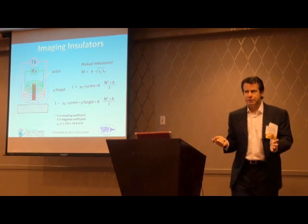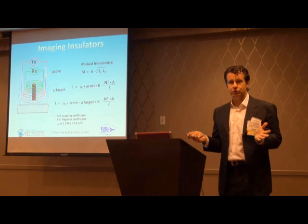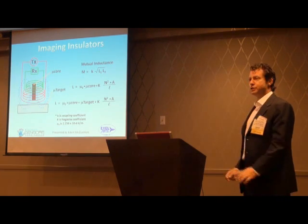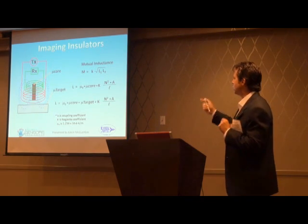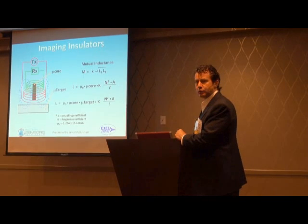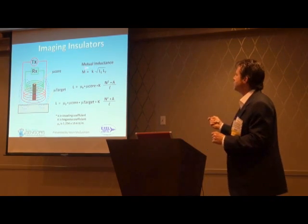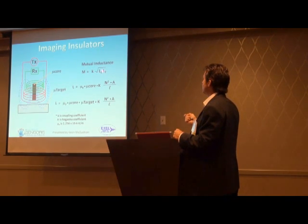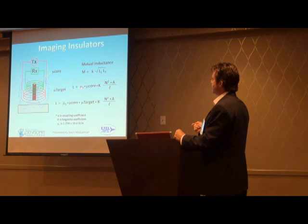We can image insulators, plastic, paper, glass, ceramic, even your finger — and that doesn't make sense from an eddy current perspective because those things are not conductors. Why can we do it? Our sensor has a ferrite core, as you would in an eddy current sensor, and we transfer energy by mutual inductance from one coil to the next. That's a transfer constant multiplied by the square root of the inductance of the first coil times the inductance of the second coil.